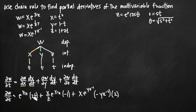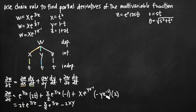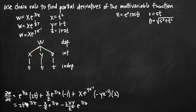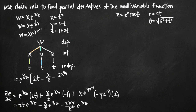Now it's just a matter of simplifying. What we'll get is 2t times e to the y/z, minus x/z times e to the y/z. Then we have the negative and the 2, so we get minus 2xy, and the z to the negative 2 moves to the denominator as z squared, times e to the y/z. If we factor out e to the y/z, we get e to the y/z times the quantity 2t minus x/z minus 2xy/z squared. This is our final answer for the partial derivative of this multivariable function.